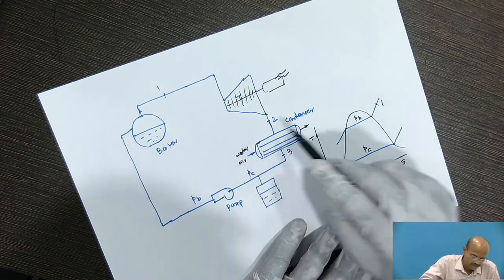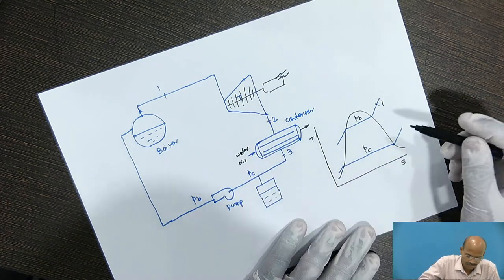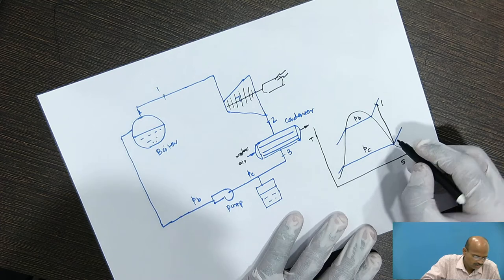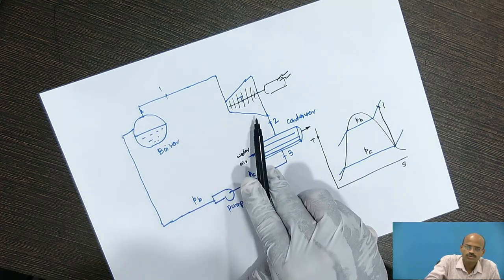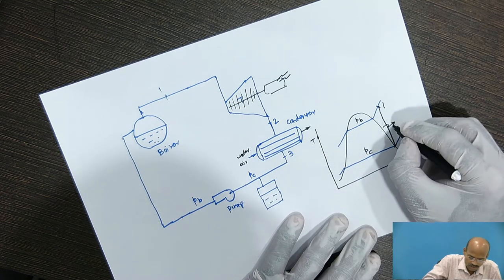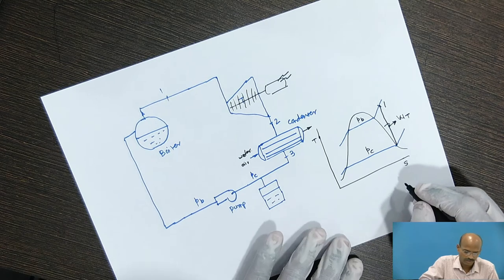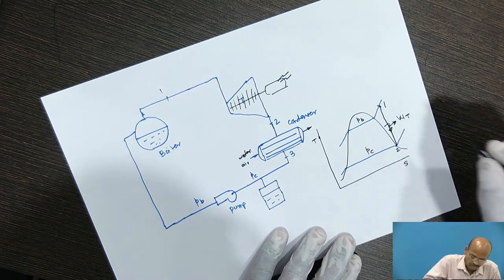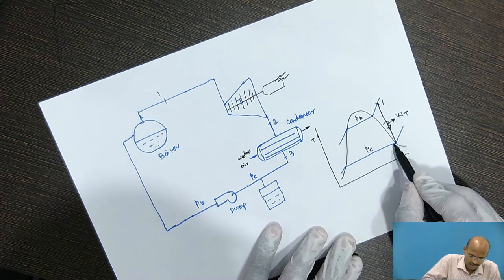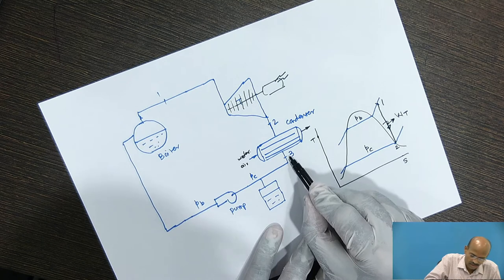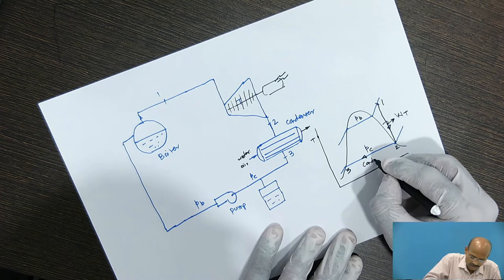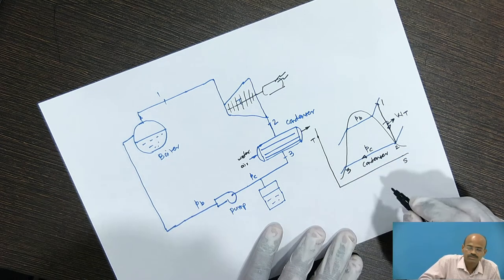So, when the steam undergoes the isentropic expansion, there is work development. The work will be developed during the process 1 to 2, which occurs in the turbine. This is called as turbine work. At state 2, theoretically, the saturated vapor gets converted into saturated liquid in the condenser. So, this is the location of the condenser on the T-s plot.